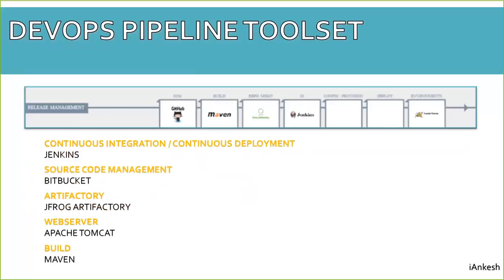For this DevOps pipeline, we are going to use five tools. The first is Bitbucket for source code management. The second is Maven for build. The third is JFrog Artifactory for artifact management. The fourth is Jenkins for CI and CD. The fifth is Apache Tomcat as the web server.